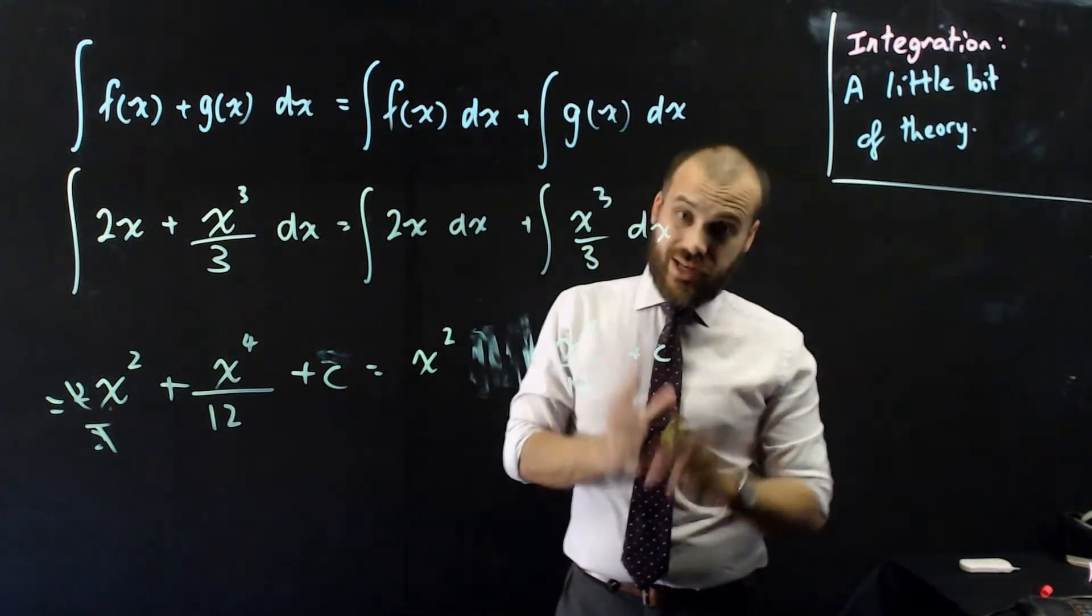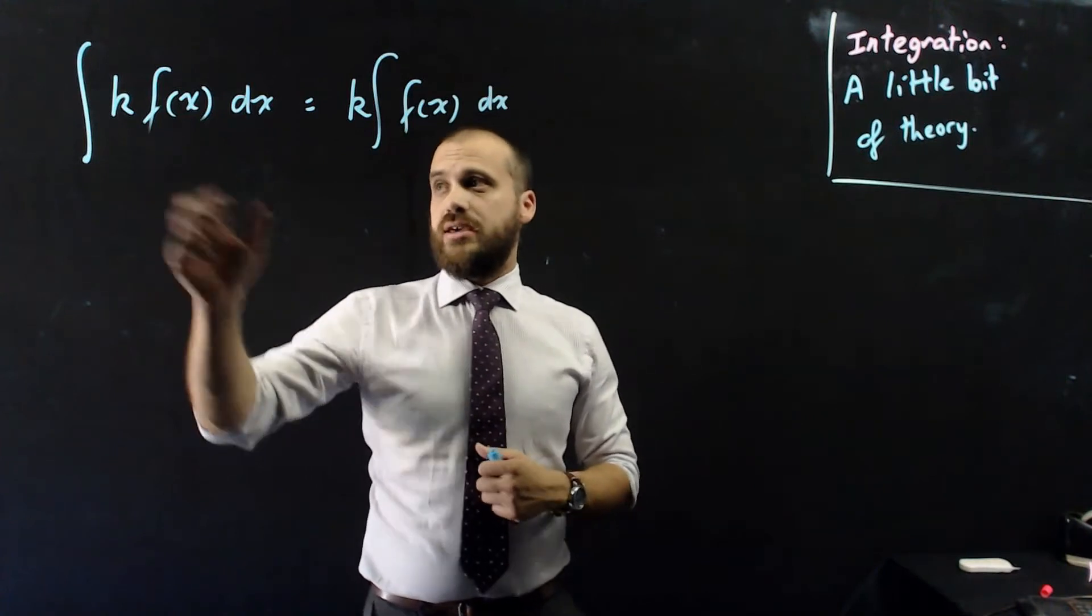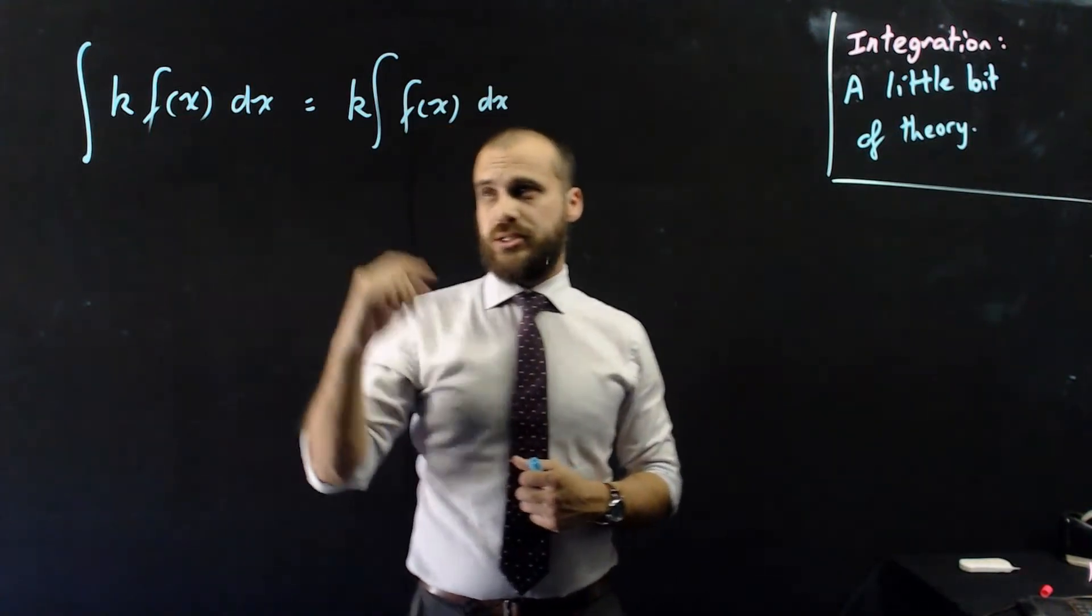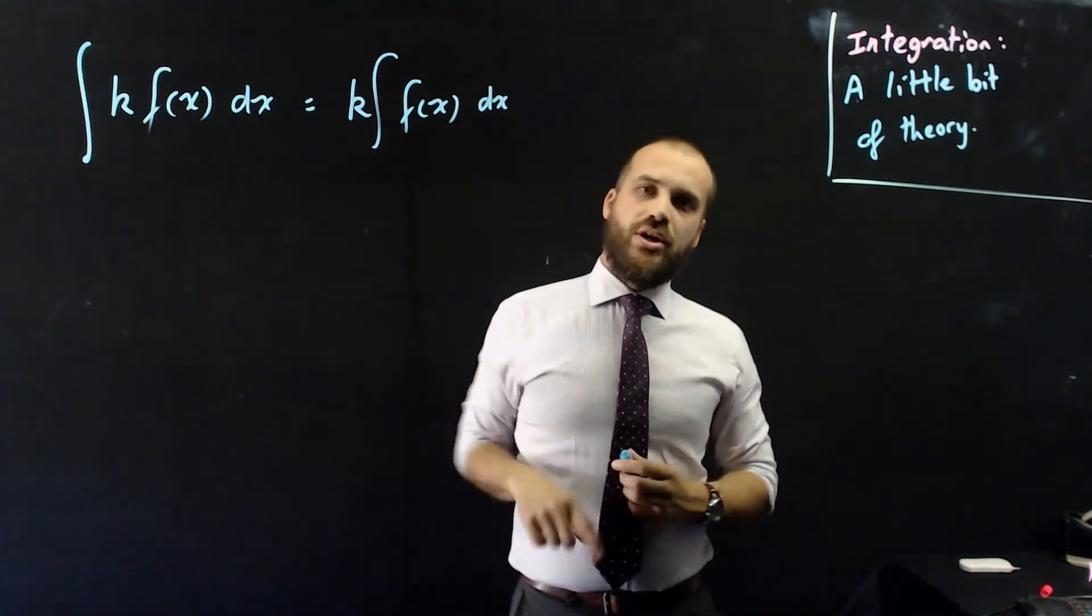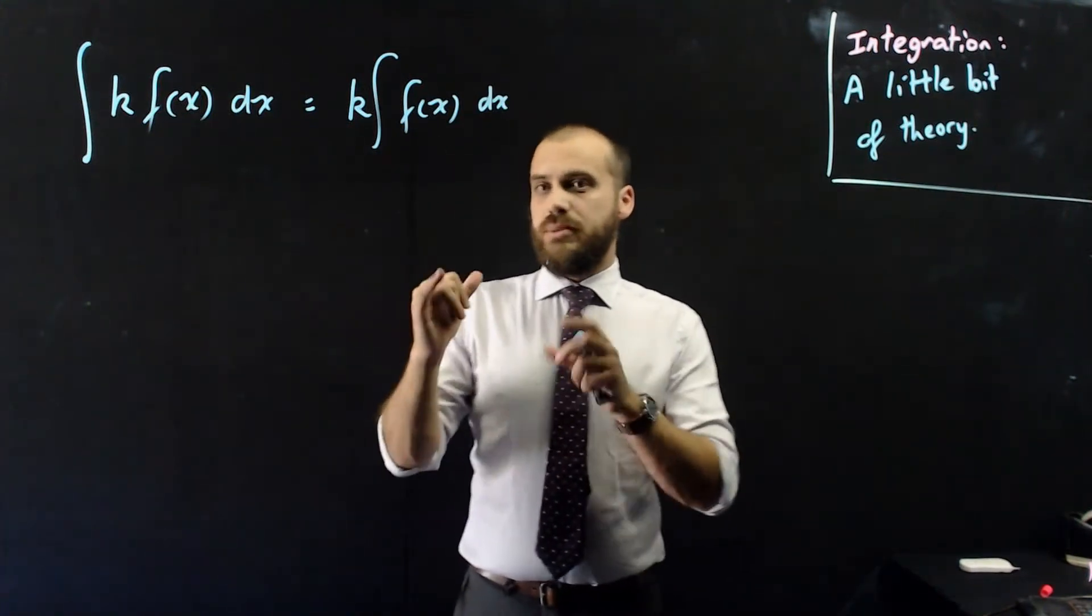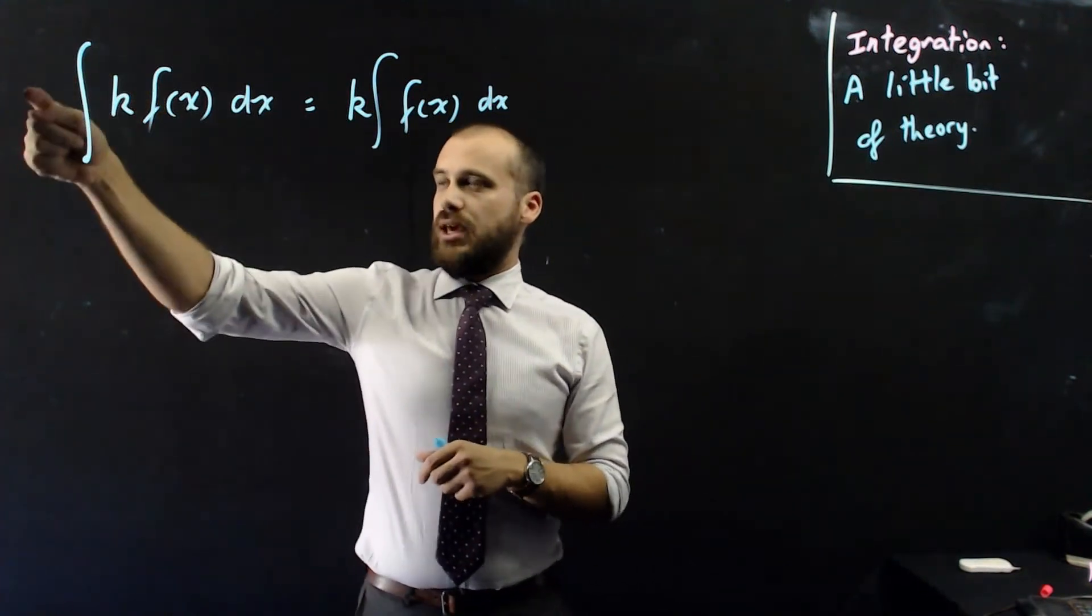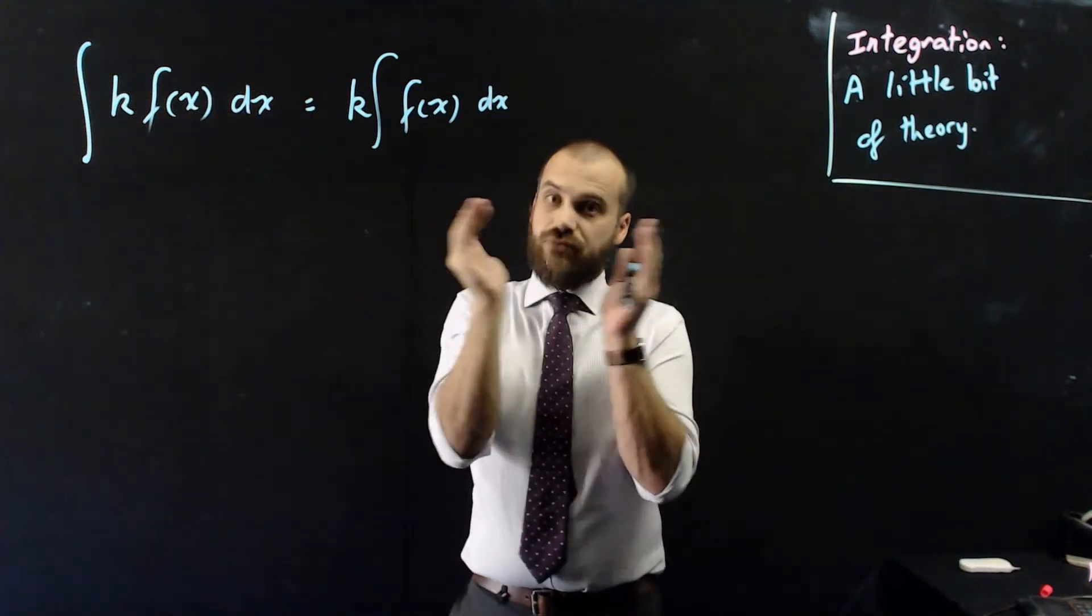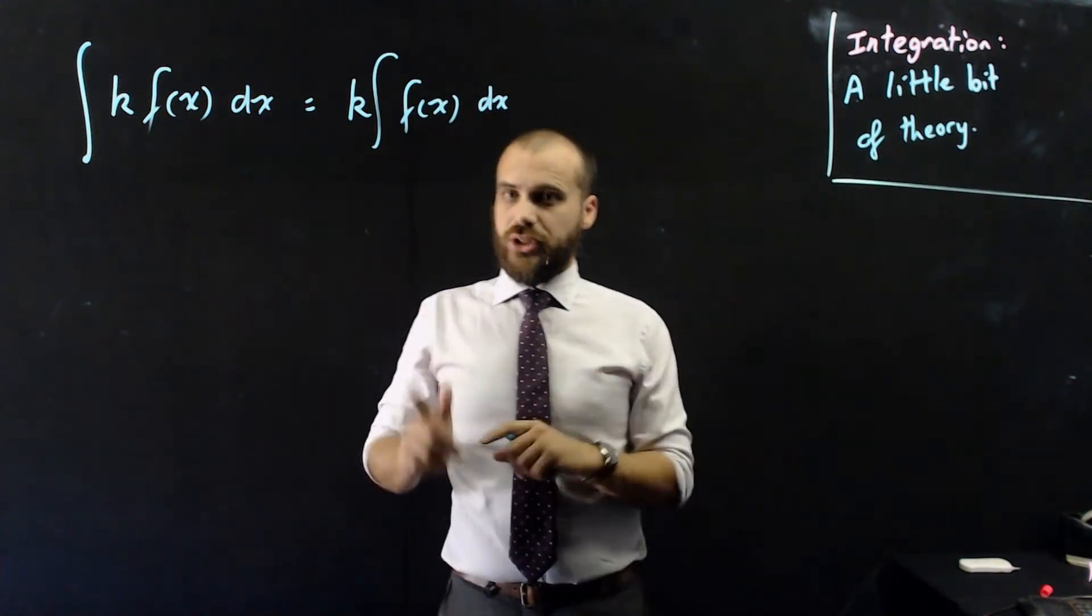Probably more important is this next little formula I'm going to show you. The integral of k times f of x with respect to x is equal to k times the integral of f of x with respect to x. It just means that if we've got our function being multiplied by something, we can take that something out of the integral and work out the integral separately. This gets really useful later on.